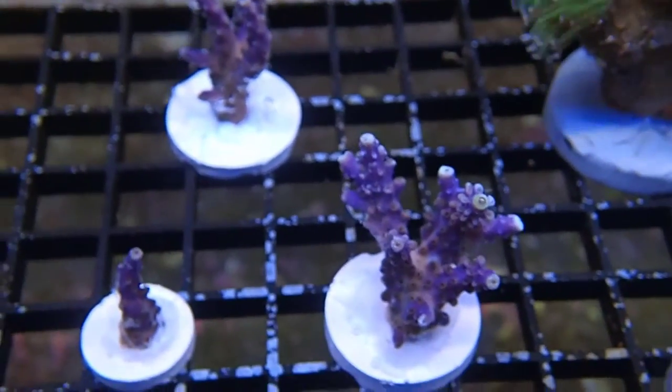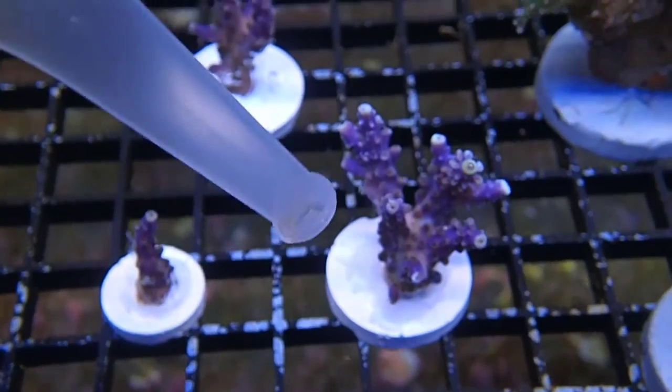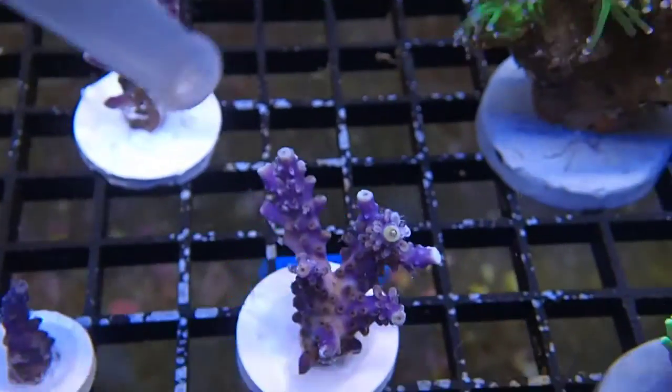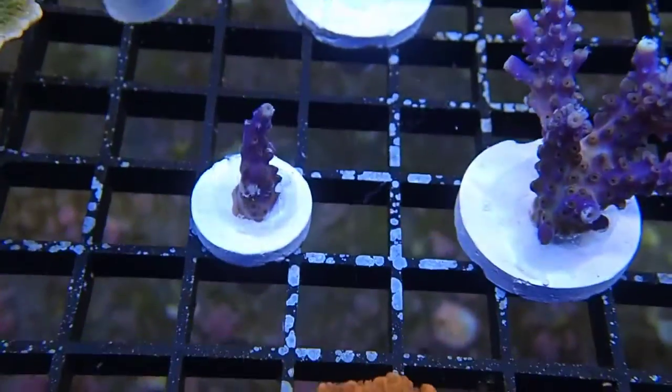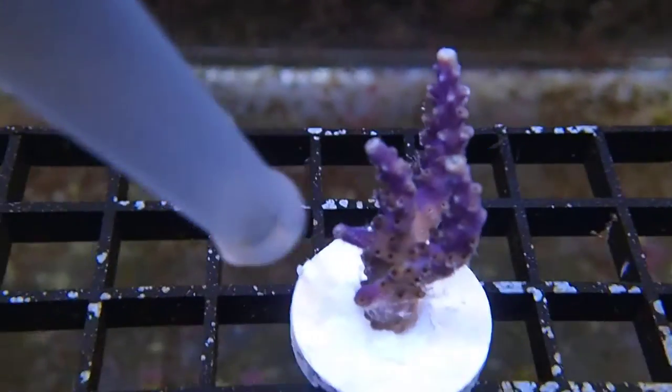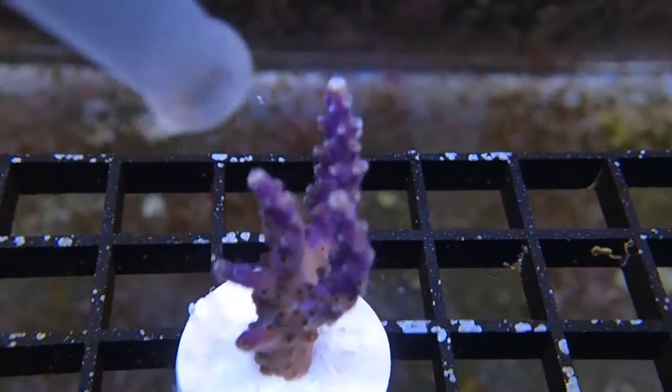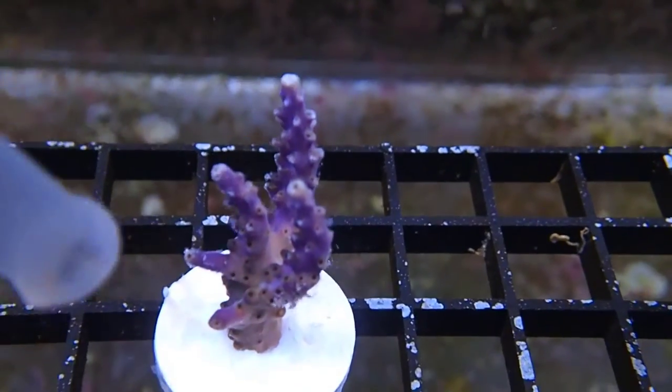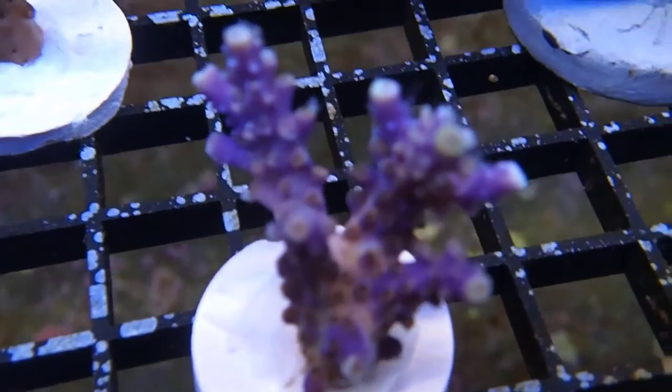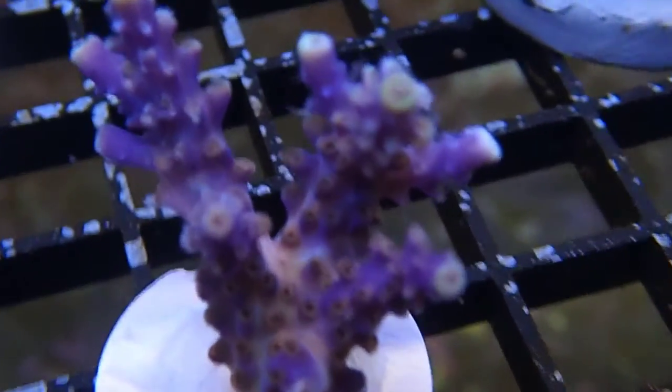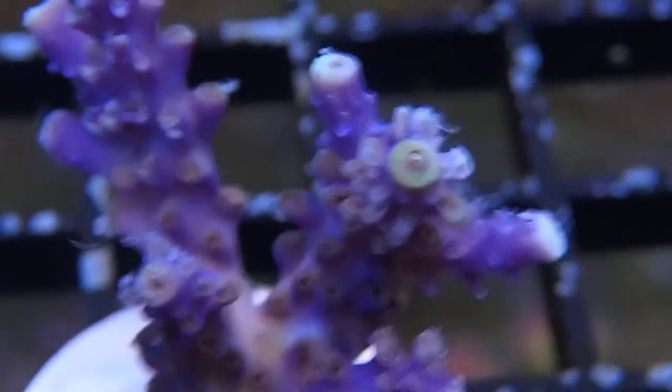Even though we rinsed off the corals a few times, you can see there's still a mucus coating along the outside of the Acroporas and this needs to be cleaned off. We take the turkey baster and gently blow it off. You can see there's micro bubbles collected too along this mucus and the glue, so it's just good practice to rinse them off again. It helps the corals breathe and overall helps ensure their general health and well-being.